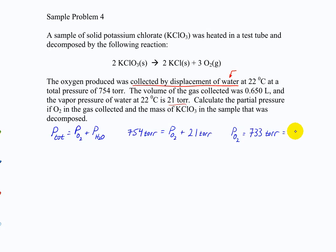I'll do the first conversion: 733 torr is 0.964 atmospheres. Now, as a review from last week, try to finish this problem. We know the pressure of oxygen, the temperature is 22°C, and the volume is 0.650 liters. Figure out the mass of potassium chlorate in the sample that was decomposed — you'll use a gas law to find moles of oxygen, then get moles of potassium chlorate, and so on.